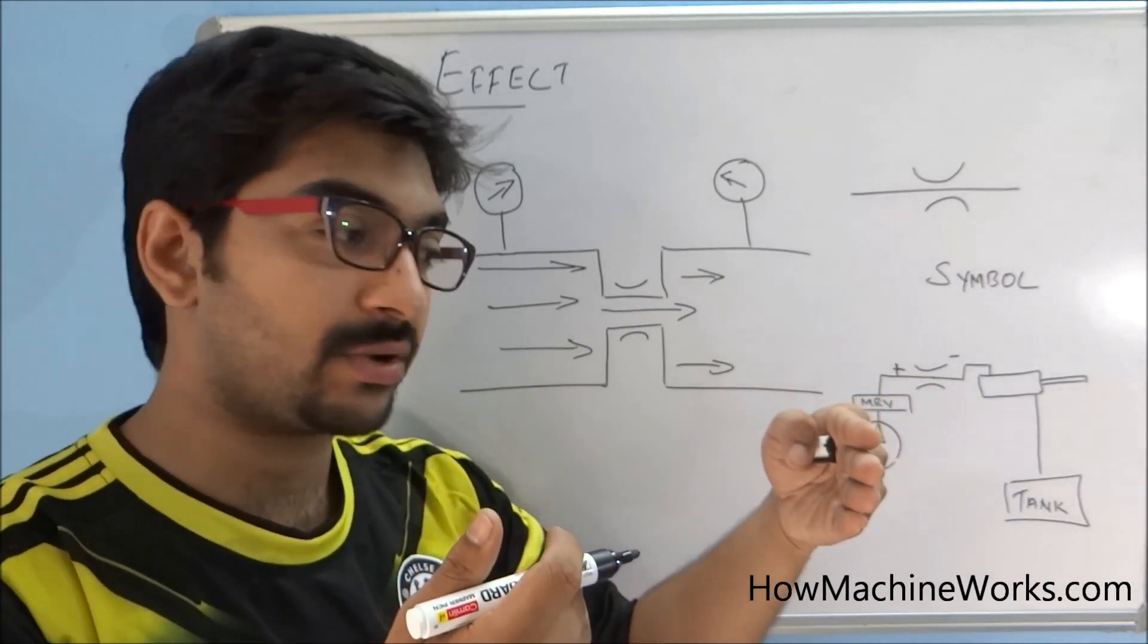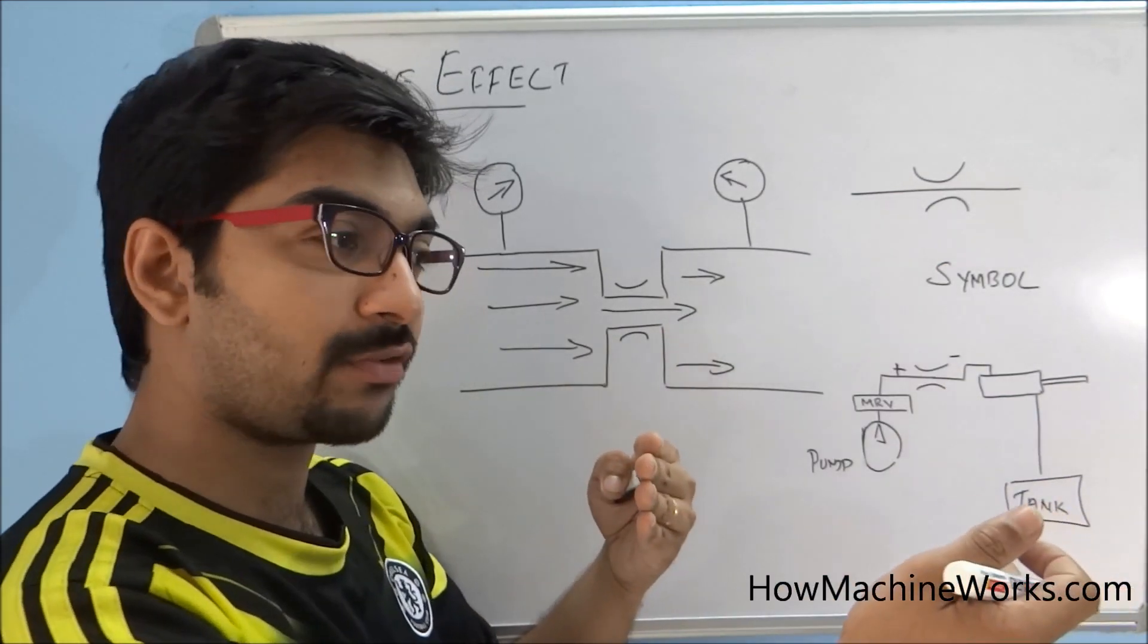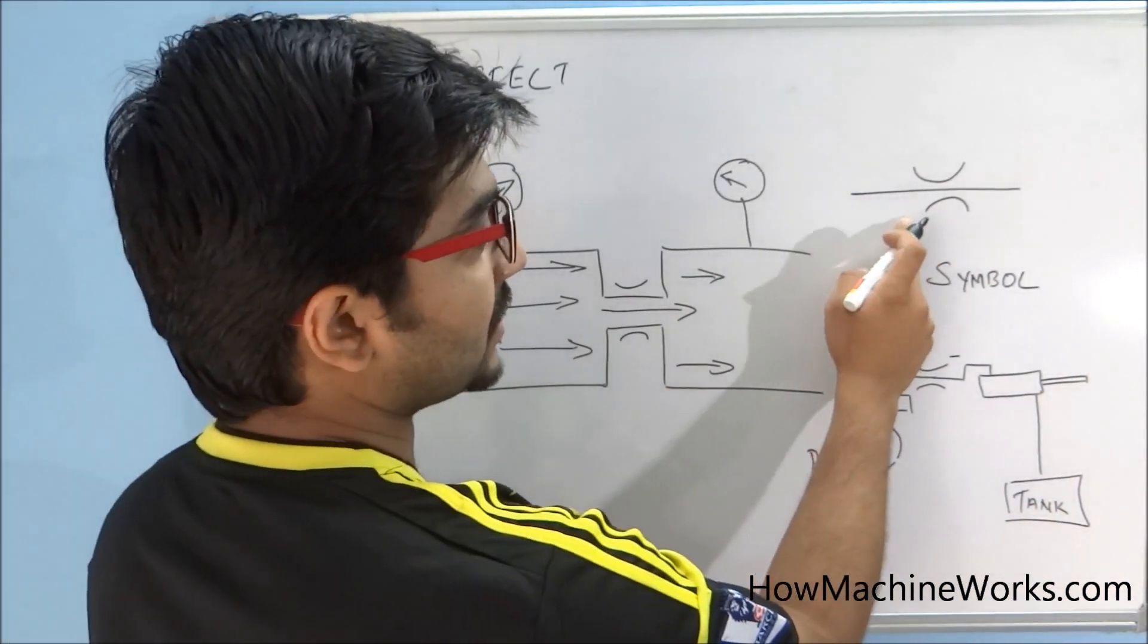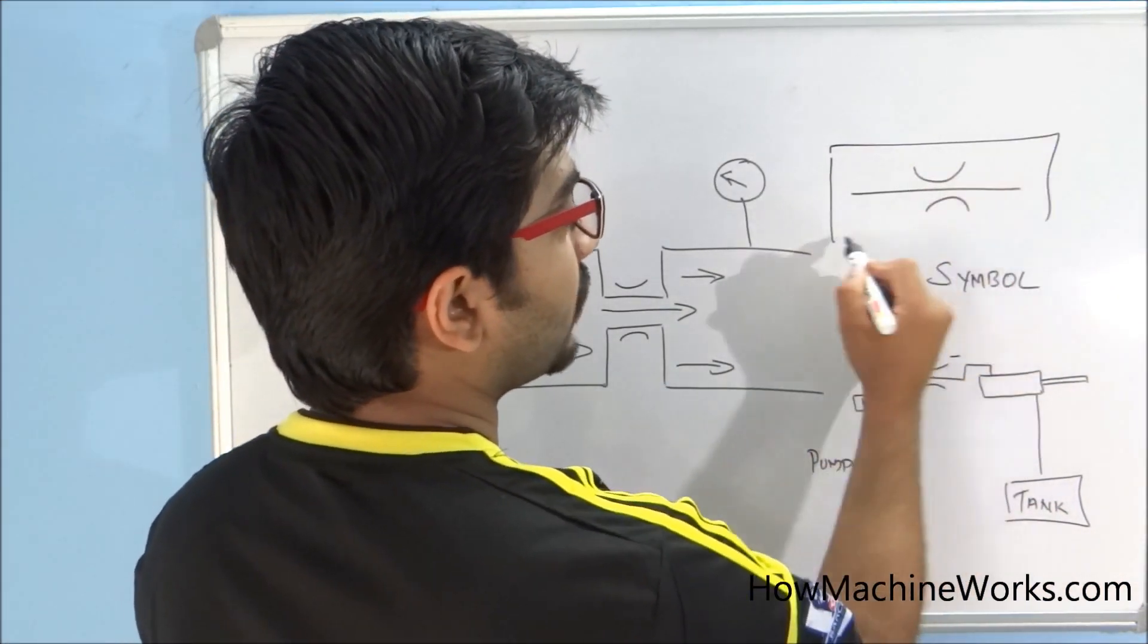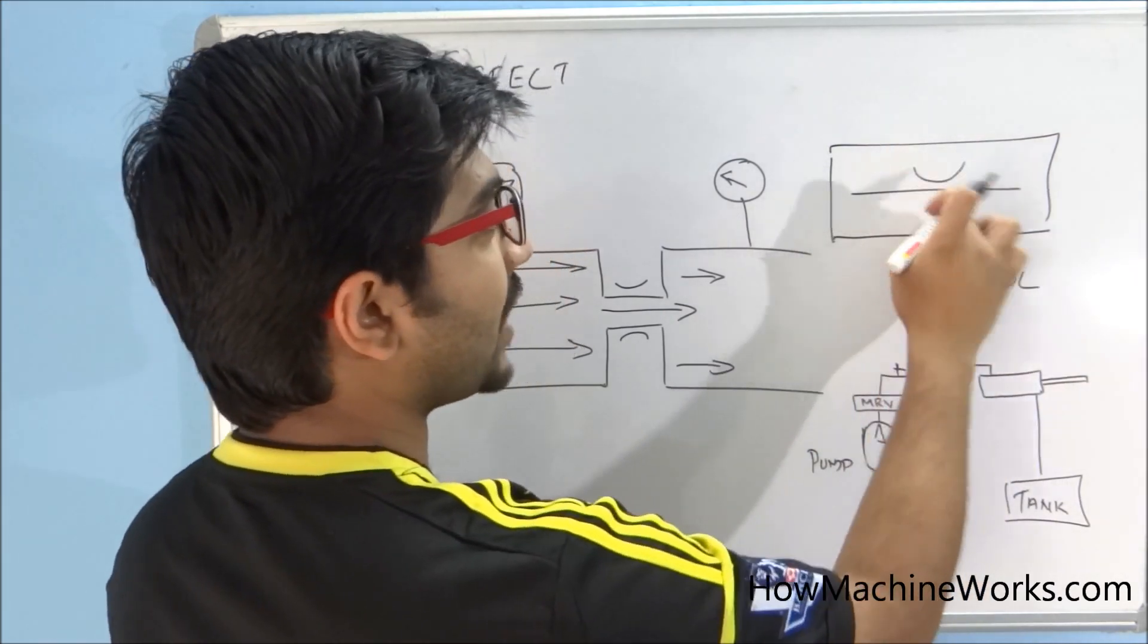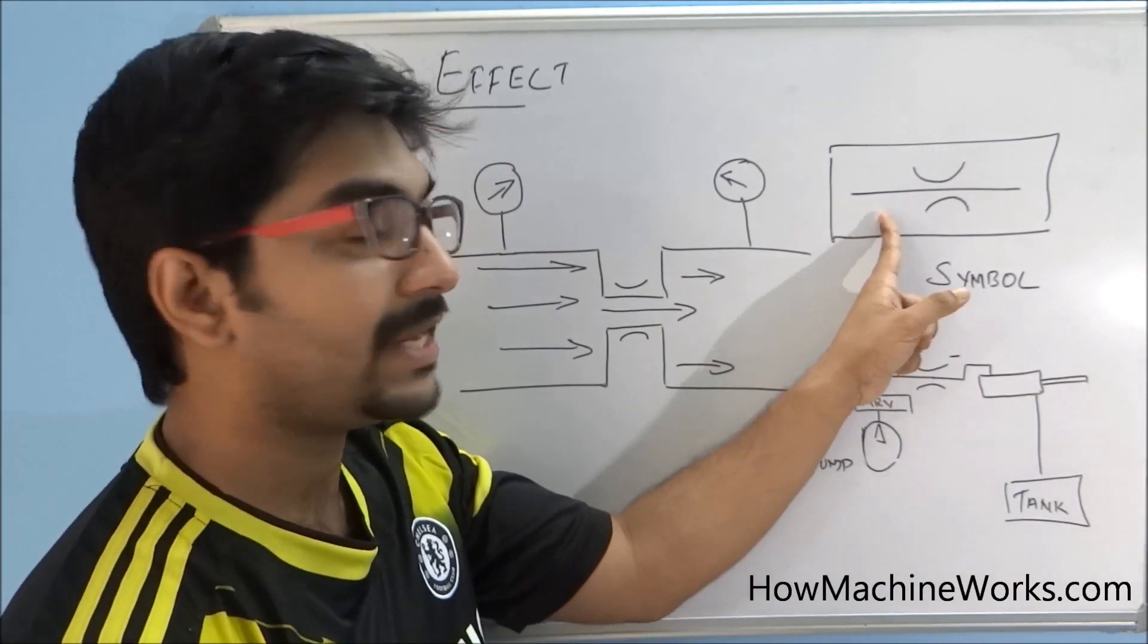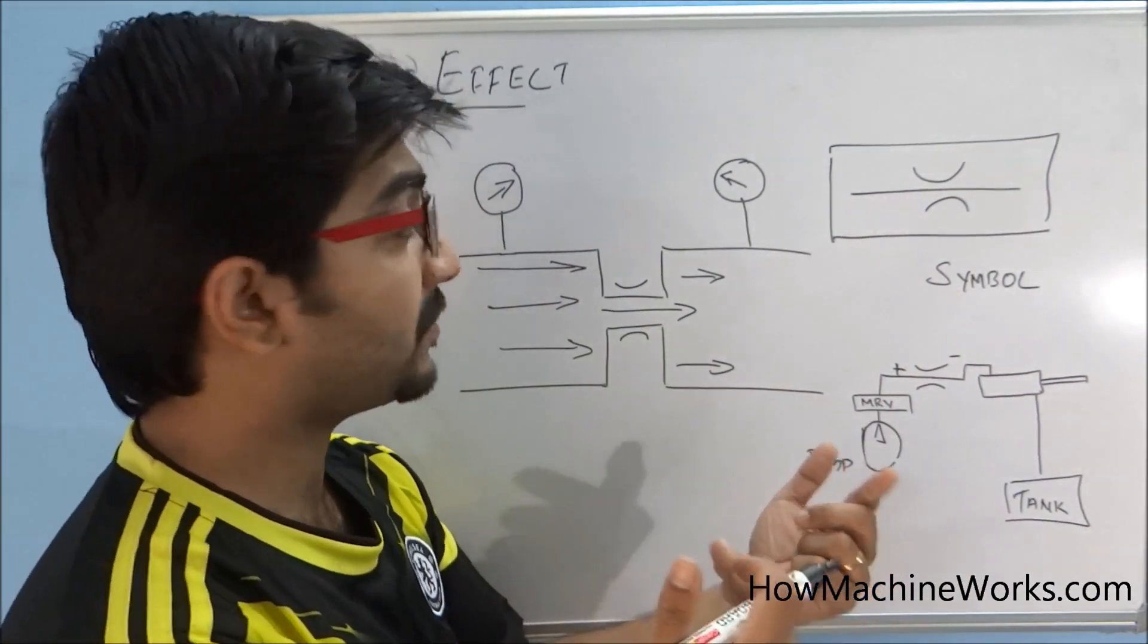At the next section of that, we require only lesser pressure, so we place an orifice in that section. This is a symbol of an orifice, so this means that we have an orifice at that section. This is a schematic representation of an orifice in a hydraulic circuit.